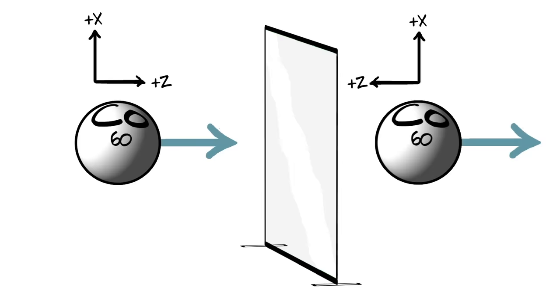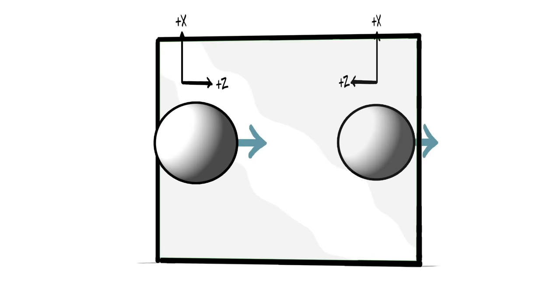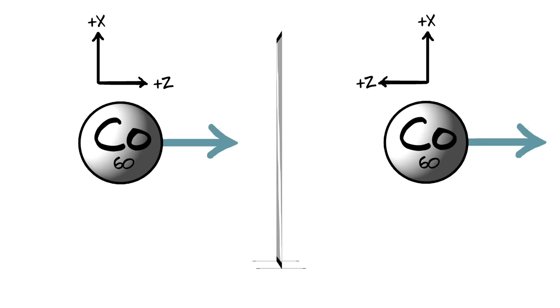That's because an object that's rotating clockwise is still rotating clockwise in the mirror. So this means that the spins of the regular and mirror nuclei are aligned. The mirror experiment is actually the same experiment as the original.